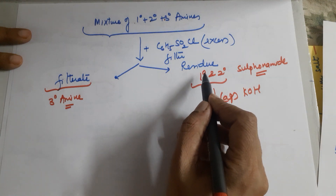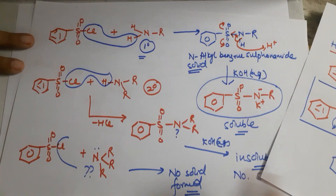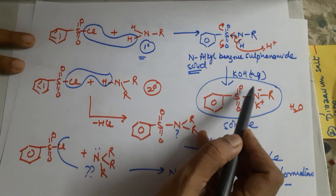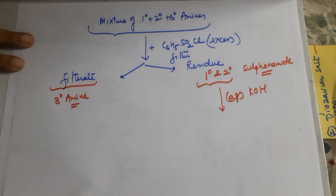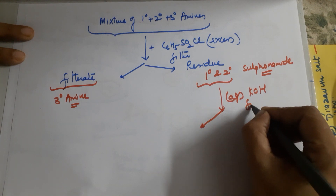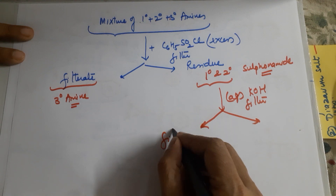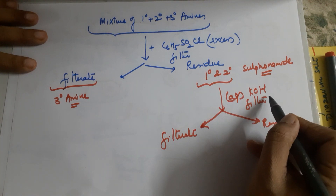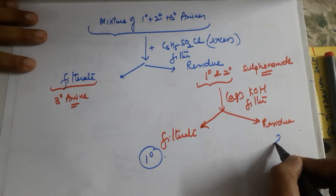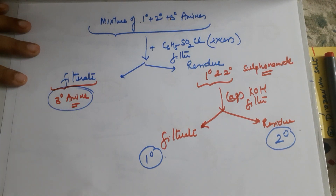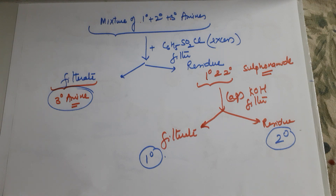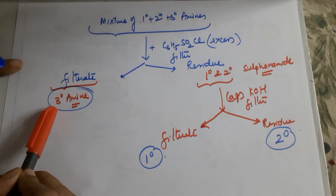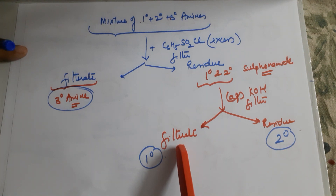The sulfonamide of 1st degree amine reacts with aqueous KOH because it has the tendency to form a potassium salt, so in KOH the 1st degree sulfonamide dissolves. You again filter: the filtrate contains the potassium salt of the 1st degree sulfonamide, and the residue contains the 2nd degree sulfonamide. Later, the sulfonamides can be hydrolyzed to get back the amines, and the potassium salt can be treated to give back the 1st degree amine.